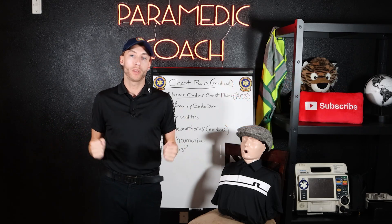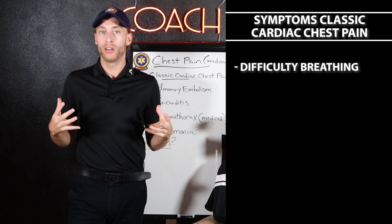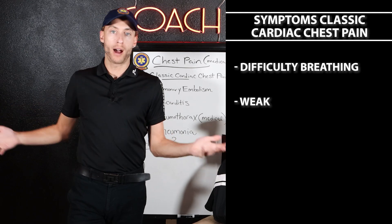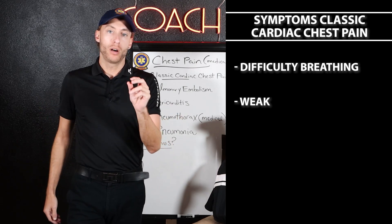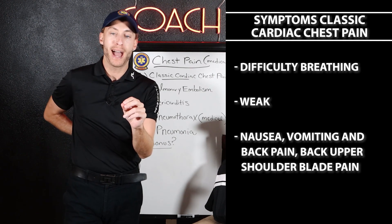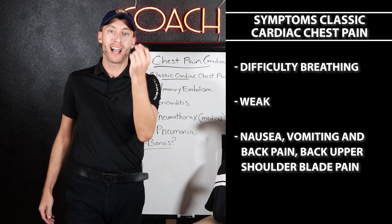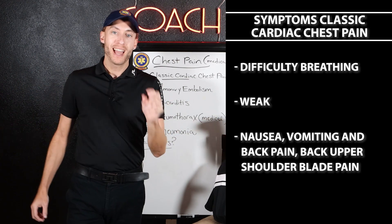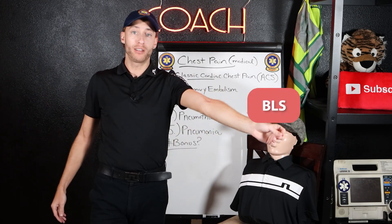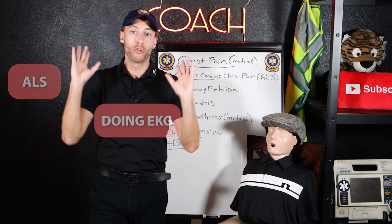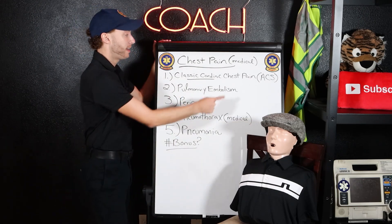What else might the patient have as far as symptoms? Difficulty breathing — they don't have enough energy because they're not getting enough oxygen to their heart to move around, so they're weak and very tired. They're having a hard time breathing. You might also see nausea, vomiting, and back pain — upper shoulder blade pain — which is another sign and symptom of classic cardiac chest pain. Anybody that has chest pain and calls 911 is getting a 12-lead EKG, period. Whether you're BLS putting stickers on and transmitting, or ALS reading it, you're doing an EKG.